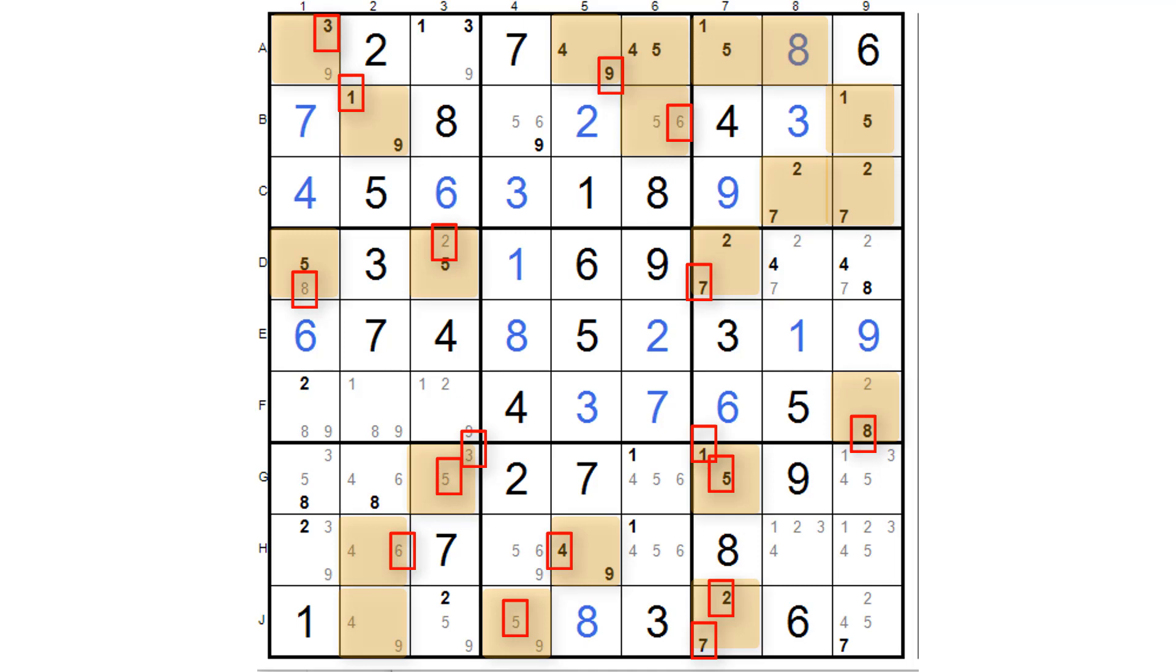So starting now with that six in B6, we want to find another six somewhere in our target cells. Look around and see, can you see another six anywhere? The only one I can find is down in H2.